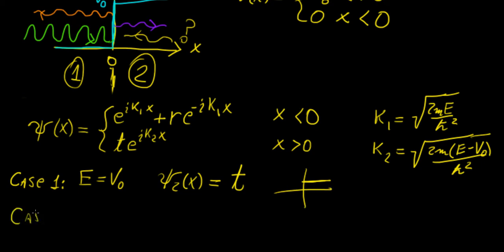But something a lot more interesting happens if we have something like this. Let's say that E is less than V0. Then our equation is going to be the following. Well, let's think about this. If E is less than V0, then this whole quantity inside the square is negative, which implies that we're going to have a complex number here.